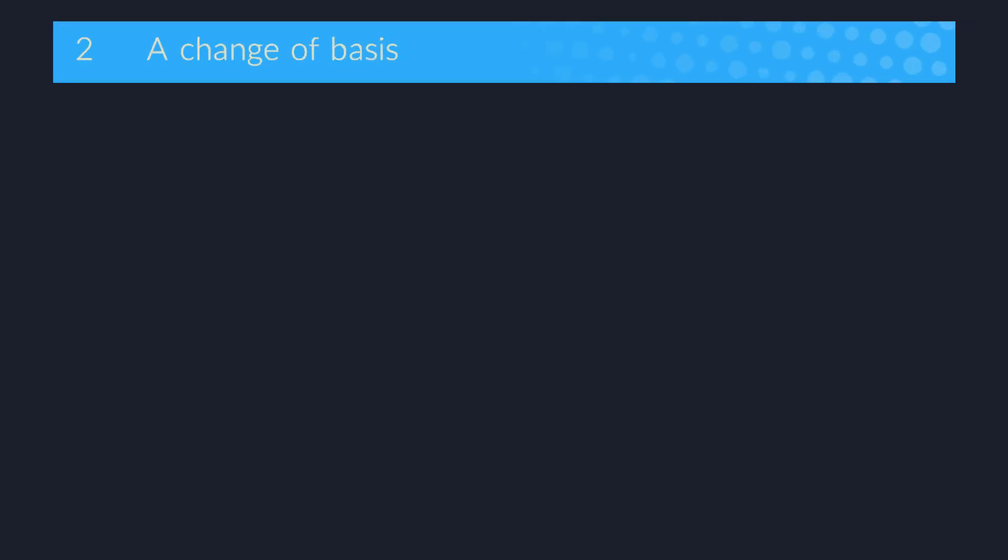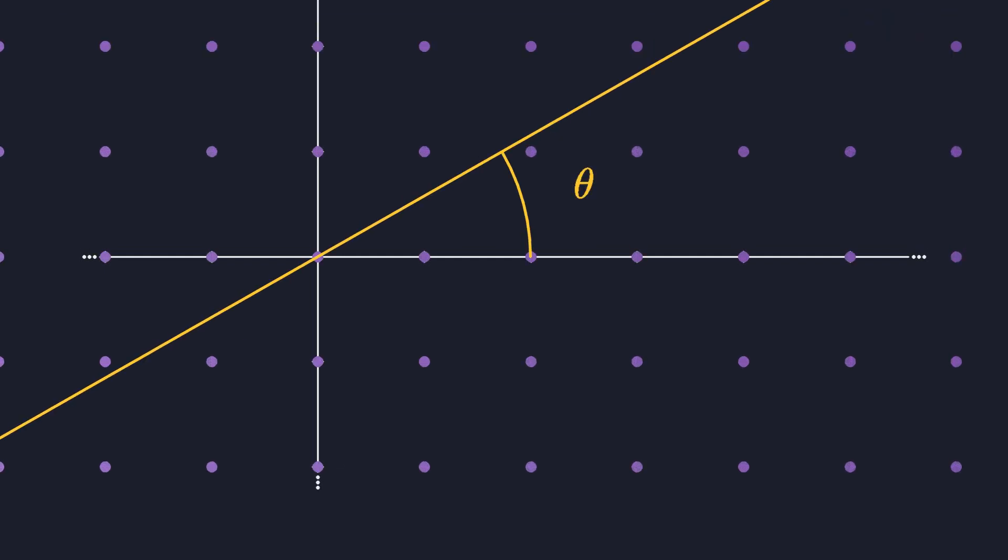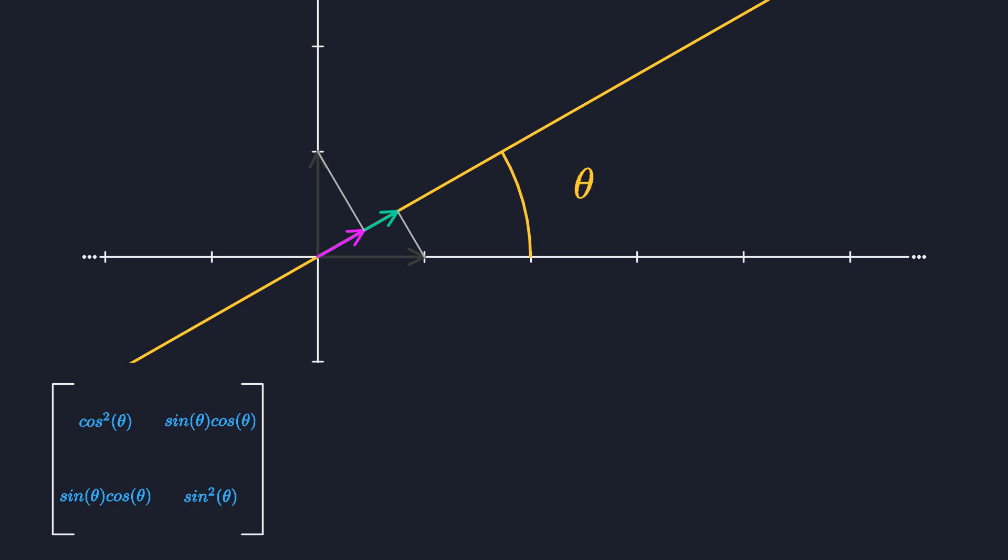In an earlier video I showed you how to project vectors onto a slanted line. When preparing for that video I had to figure out the exact contents of the matrix that represents this projection. So I did what you would always do. I followed the basis vectors. They get mapped here and here. It takes a bit of trigonometry and triangle chasing to find the correct coordinates for these points. Nothing too difficult but still quite a bit of work. Then I just ploinked those coordinates into the columns of my matrix and I had what I wanted.